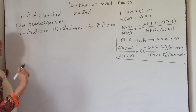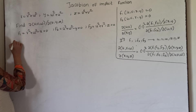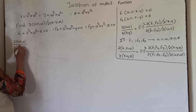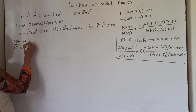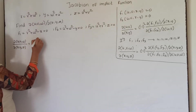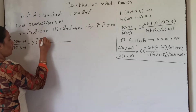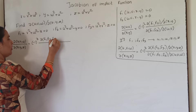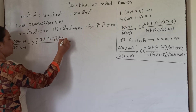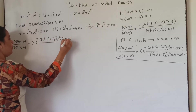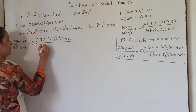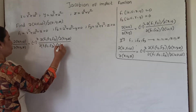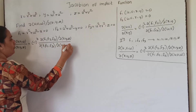We write down the implicit relations: f1 = v² + w² − x = 0, f2 = u² + w² − y = 0, f3 = u² + v² − z = 0. So we have three implicit relations between u, v, w, x, y, z. Since we have three functions, we multiply by minus 1 cubed, and we use the Jacobian of f1, f2, f3 with respect to u, v, w.